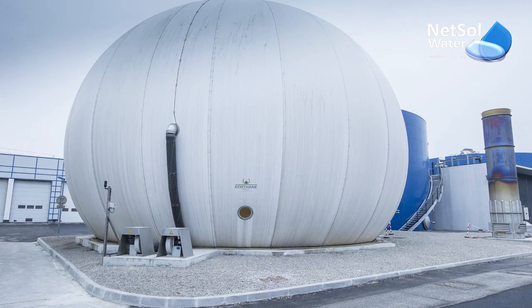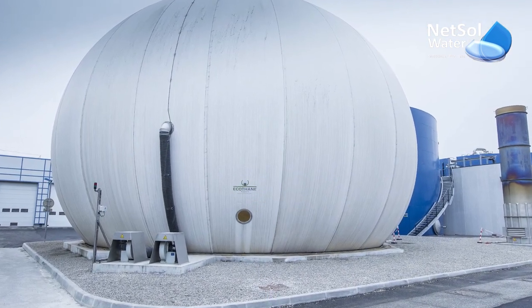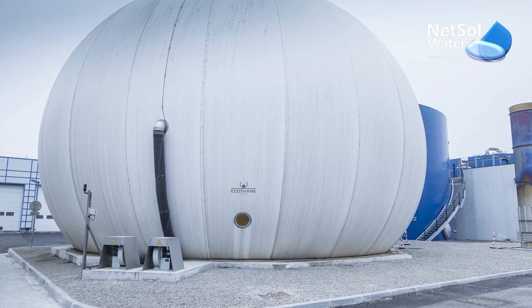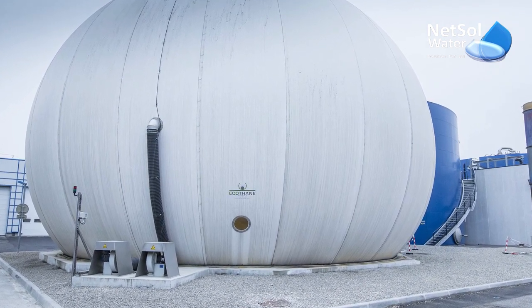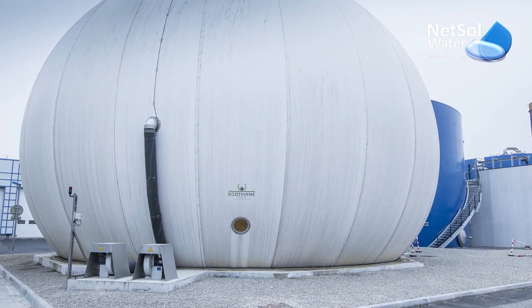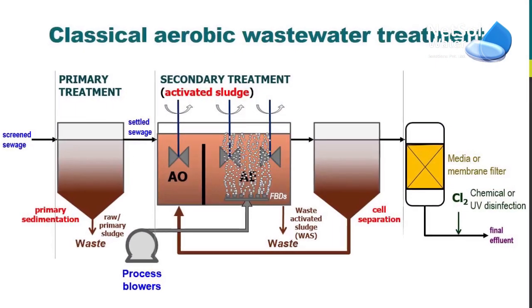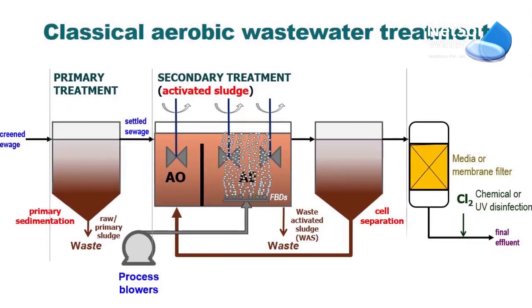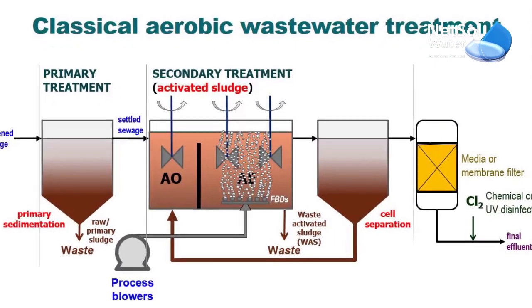Process number two is sludge digestion. It is a technique applied to biological sludge to reduce its toxic properties. In this process, organic solids are decomposed into stable compounds.